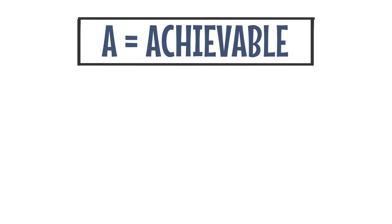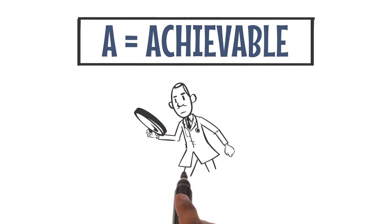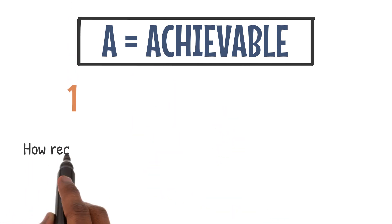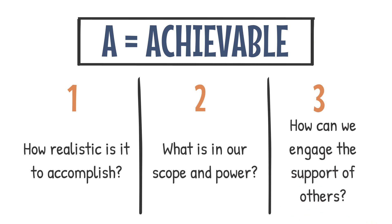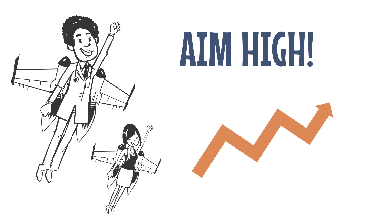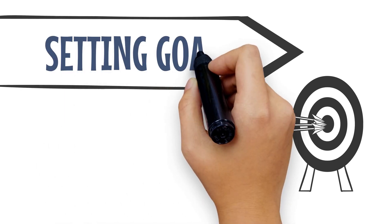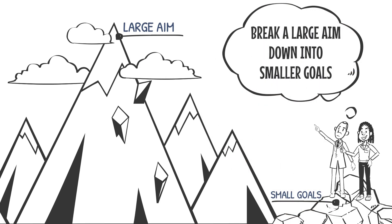A is for achievable or attainable. To be realistic, a goal must be something that you are both willing and able to do. It's important to honestly evaluate your team's abilities and scope. Key questions to address here are: how realistic is it to accomplish based on other constraints? What is in our scope and power to change? How can we engage the support or involvement of others to make this more realistic and achievable? It is important to note an aim can be both difficult and realistic, so don't be afraid to aim high. A high aim can actually be easier to reach than a low one because a low aim exerts low motivational force. Consider goals that challenge and stretch your team without setting yourselves up for imminent failure. One of the best ways to make an achievable aim is to break a large aim down into smaller goals.